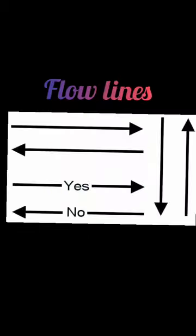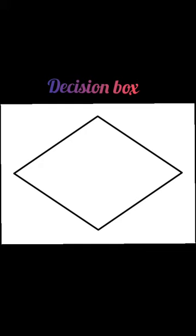Fifth, flow lines: flow lines connect two boxes and determine the flow or sequence of the instructions in the process. And sixth, the decision box: it is diamond in shape. This is used for a condition or branch in the process.